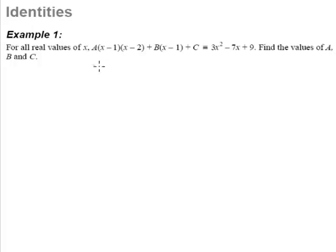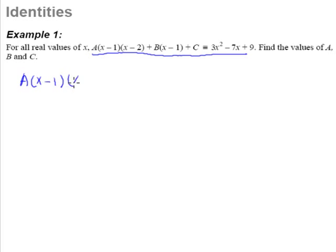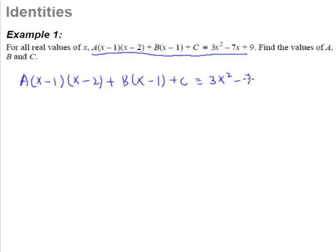Let's take a look at Example 1. What we know here is this identity: A(x-1)(x-2) + B(x-1) + C is equivalent to 3x² - 7x + 9.